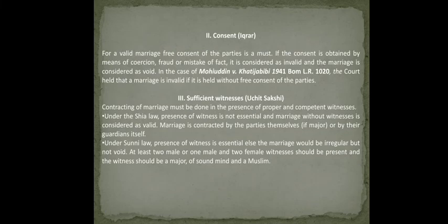The second essential element is free consent. For a valid marriage, free consent of both parties is a must. If consent is obtained by means of coercion, fraud, or mistake of fact, it is considered invalid and the marriage is void. In the case of Mahuddin versus Khatija B.B. 1941, the court held that a marriage is invalid if it is contracted without the free consent of the parties.